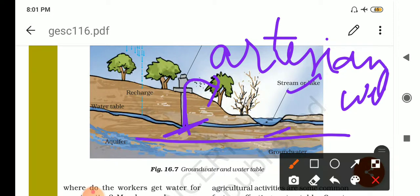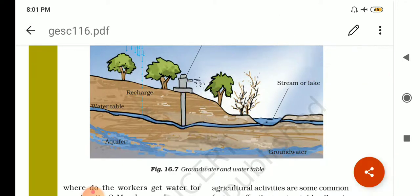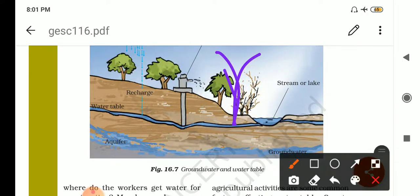Springs are formed when the groundwater finds an outlet in a porous rock. Then what will happen? Spring will be formed.